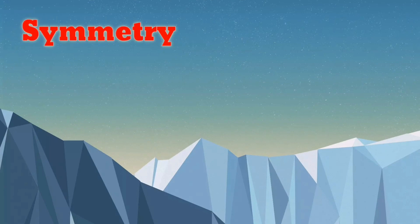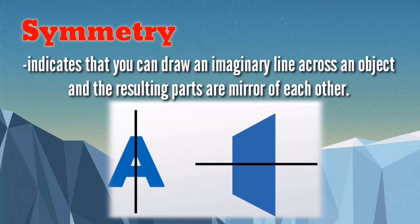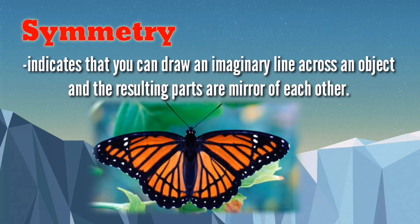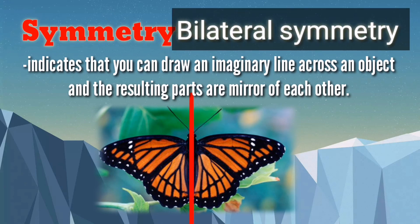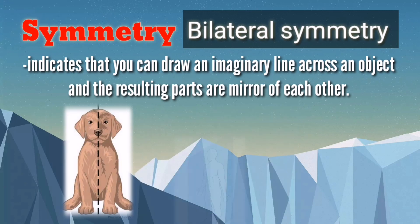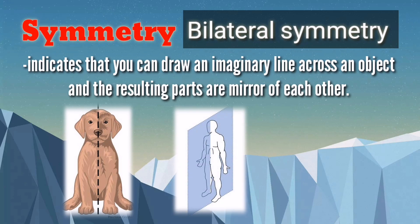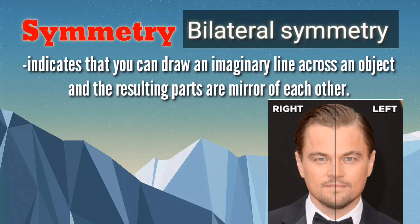Let us start with symmetry. It indicates that you can draw an imaginary line across an object and the resulting parts are mirror images of each other. This figure is symmetric about the axis indicated by the line. Note that the left and right portions are exactly the same. This type of symmetry is known as line or bilateral symmetry. It is evident in most animals, including humans. Look in the mirror and see how the left and right side of your face closely match.